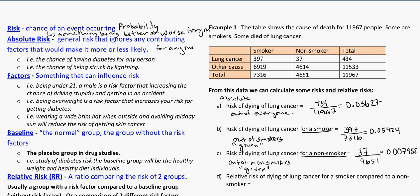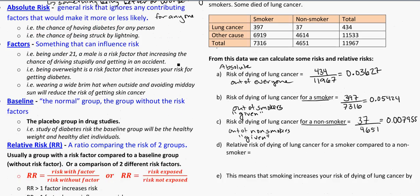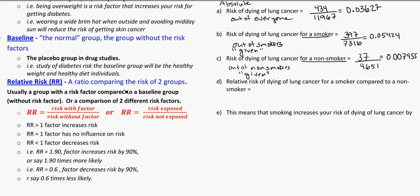The next thing we're going to look at is relative risk. This is when we compare a ratio of two different risk groups, sometimes abbreviated as RR. Usually a group with a risk factor is compared to a baseline group — people with the extra risk factor and those without it. The formula for relative risk is: risk with the factor divided by risk without the factor, or the risk of the group exposed to the hazard divided by the risk of the group not exposed to the hazard. These are things you need to memorize — they are not given to you.